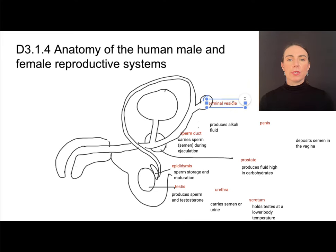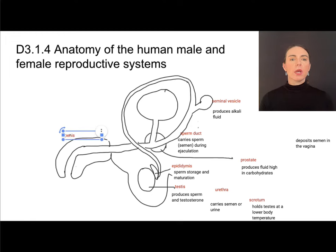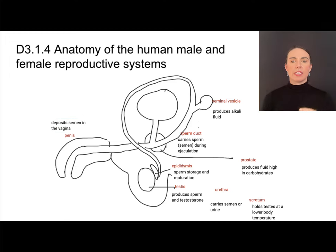The seminal vesicle produces part of the semen — a very alkaline fluid to help combat the acidic pH in the vagina. The penis deposits semen in the vagina, as close to the cervix as possible. The scrotum is the sack of skin that contains the testes and holds them away from the core of the body. They hang outside to be at a lower body temperature, because sperm production needs to take place below 37 degrees Celsius.